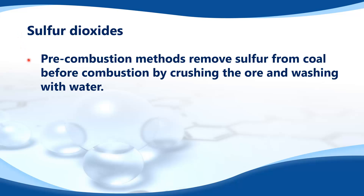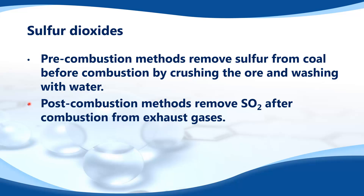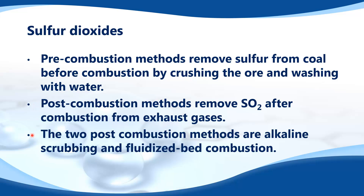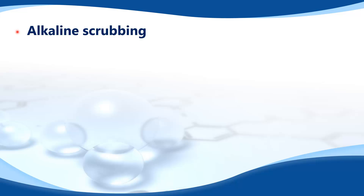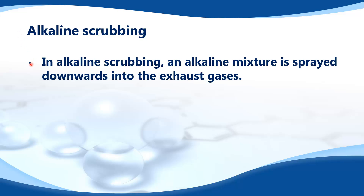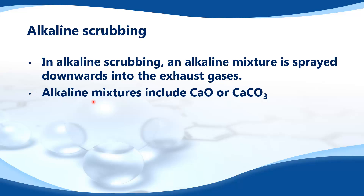Pre-combustion methods remove sulfur from coal before combustion by crushing the ore and washing with water. Post-combustion methods remove sulfur dioxide after combustion from exhaust gases. The two post-combustion methods are alkaline scrubbing and fluidized bed combustion. In alkaline scrubbing, an alkaline mixture is sprayed downwards into the exhaust gases. Alkaline mixtures include calcium oxide or calcium carbonate.